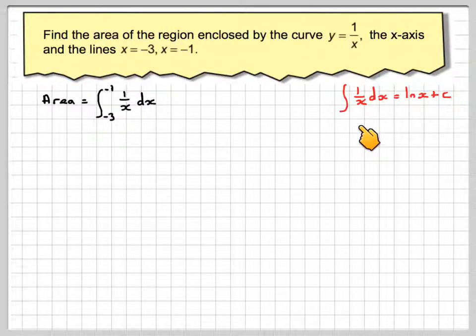Now we know if we integrate 1 over x dx, we get ln of x plus c. So what happens when we put in minus 1? We can't take the logarithm of a negative number.